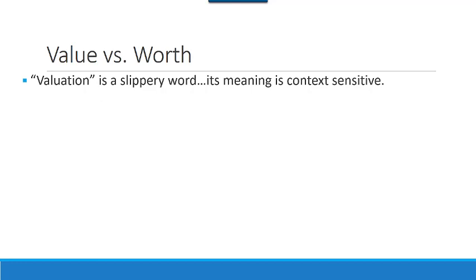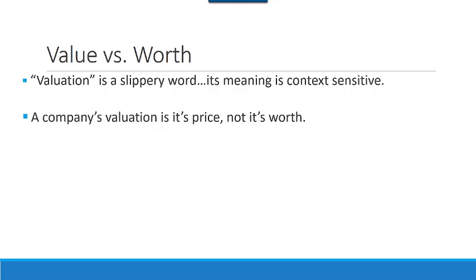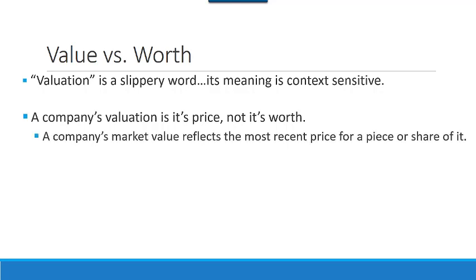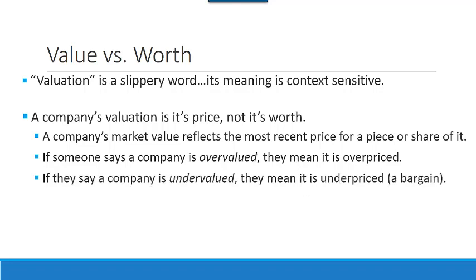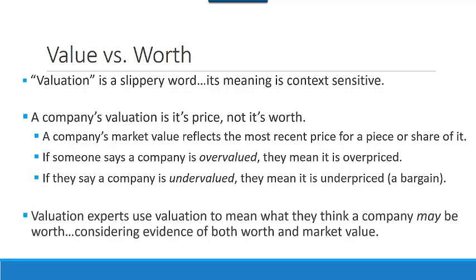Value versus worth. Valuation is a slippery word — its meaning is context sensitive. A company's valuation is its price, not necessarily its worth. A company's market value reflects the most recent price for a piece or a share of it. If someone says a company is overvalued, they mean it is overpriced. If they say a company is undervalued, they mean it is underpriced, or a bargain. Valuation experts use valuation to mean what they think a company may be worth, considering evidence of both worth in terms of asset value and income generating capability, and market value. But markets can overvalue and undervalue a company.